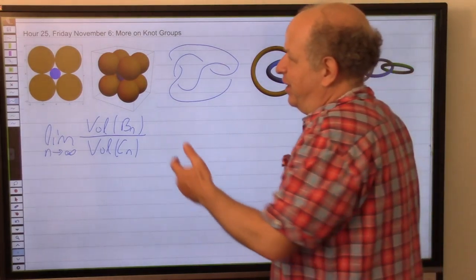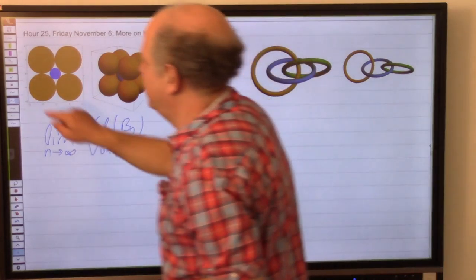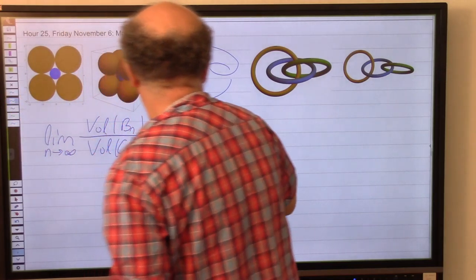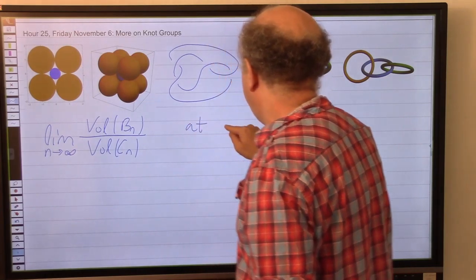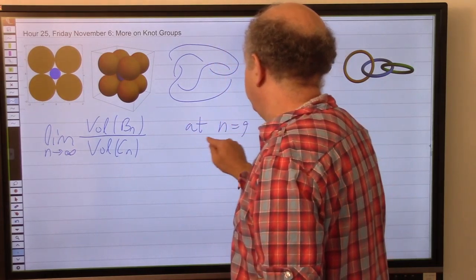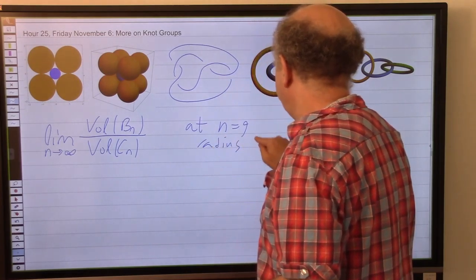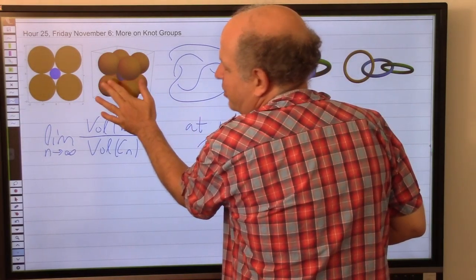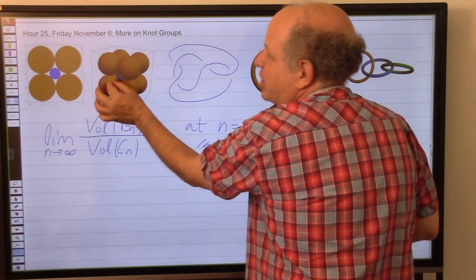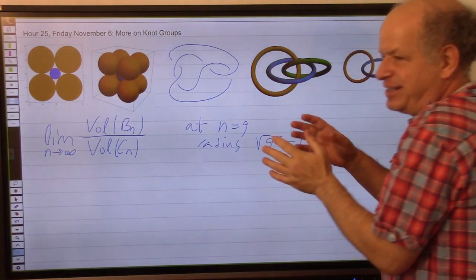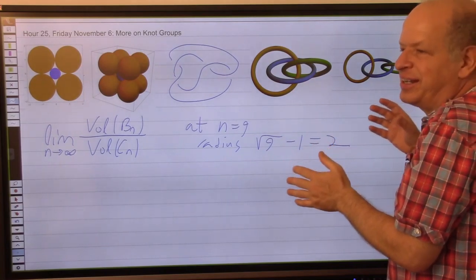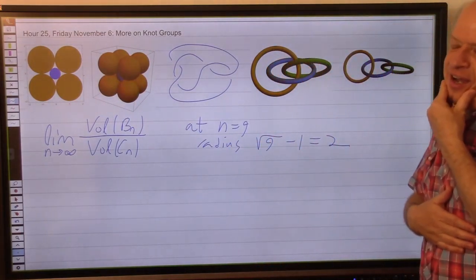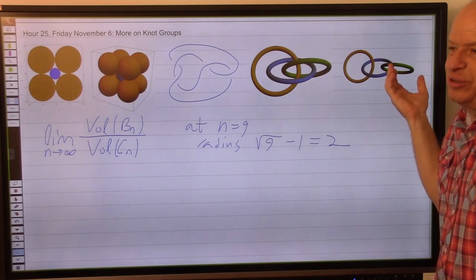At dimension 9, the radius of the inner ball is √(9-1) = √8... wait, √9 - 1 = 2. So that's where the ball is tangent to the box, and after dimension 9 it starts coming out, eventually more and more of it is outside until its volume overtakes the volume of the box. I think it's weird too, but that's why I asked.